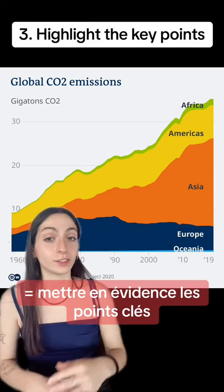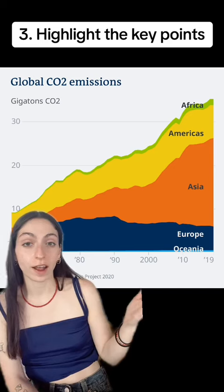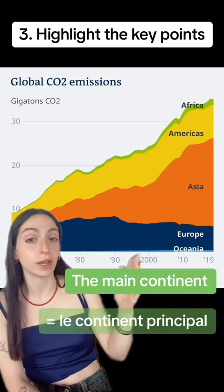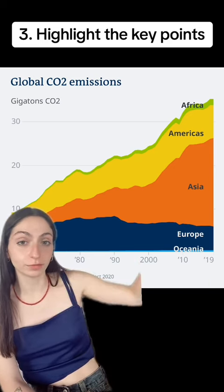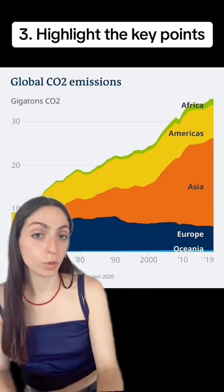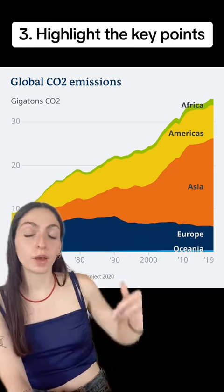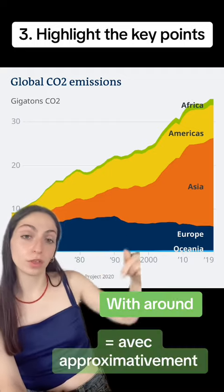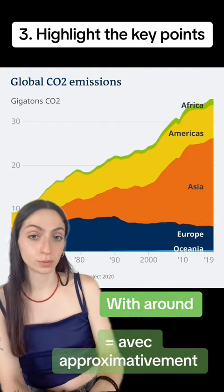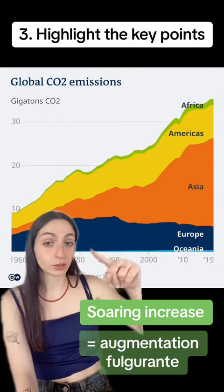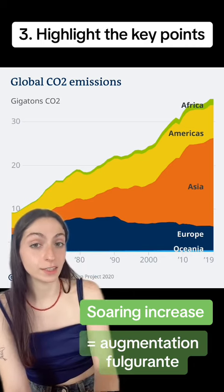Then, you have to highlight the key points. This graph highlights that the main continent emitting CO2 will be Asia, with around 30 gigatons of CO2, followed by the Americas, with around 10 gigatons of CO2. We can see that there is a soaring increase of emissions since the 80s.